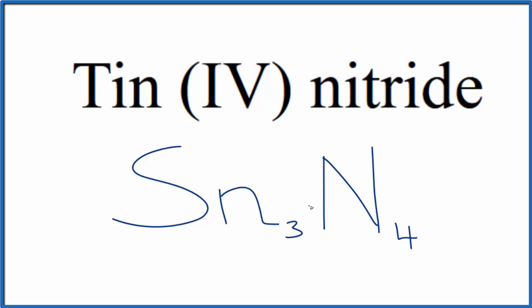But let's check our work. We said tin because of this Roman numeral is 4+. And then the nitride ion, group 15, sometimes called 5A, is 3-. 4 times 3 minus is 12 minus. 3 times 4 plus is 12 plus. So these two numbers add up to 0, give us a net charge of 0. This is the formula for tin nitride.